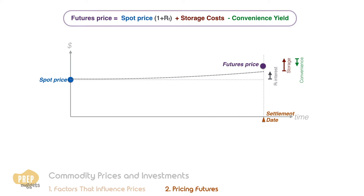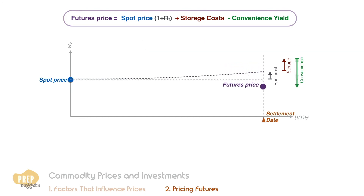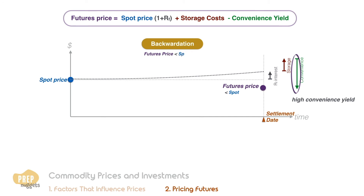As you can observe, the futures price can be lower or higher than the spot price based on the convenience yield. If there is little or no convenience yield, the futures price will be higher than the spot price, a situation termed contango. When the convenience yield is high, futures prices may be less than spot prices. This is known as backwardation.